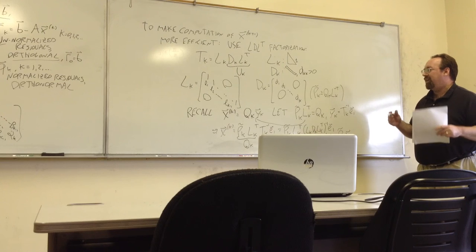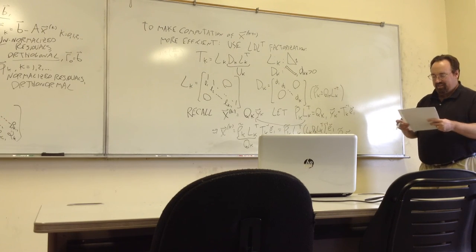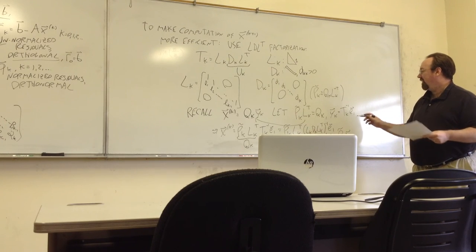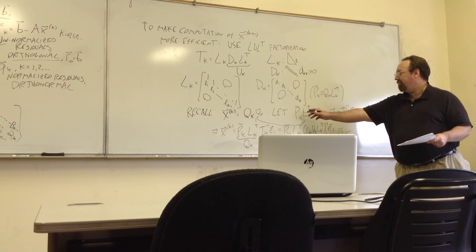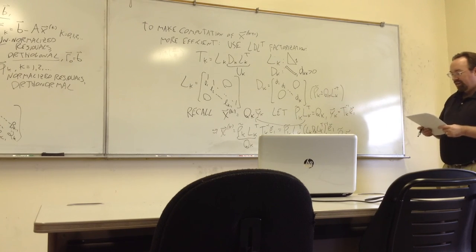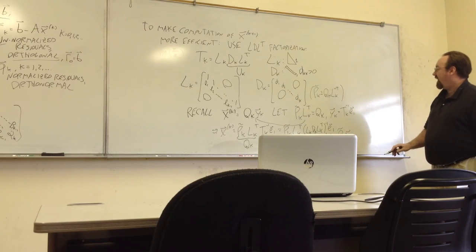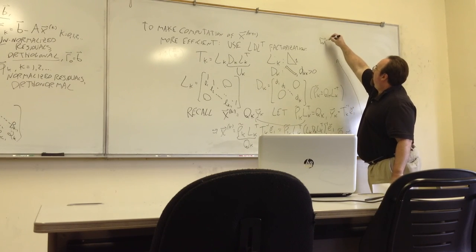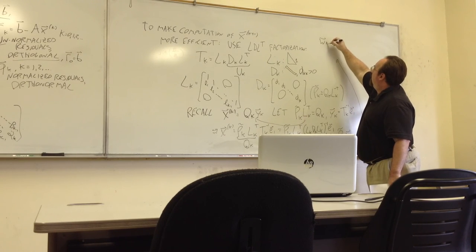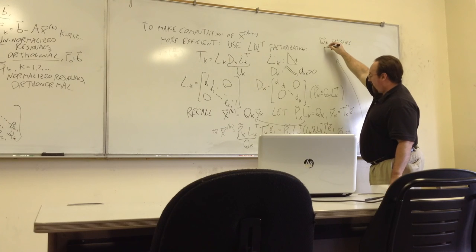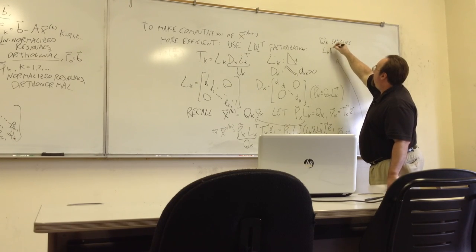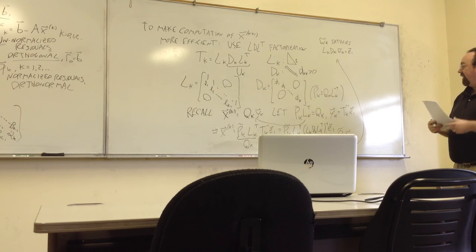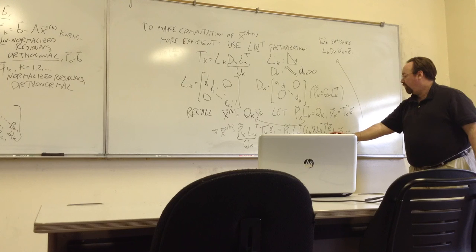It has to do with this relationship between the columns of P tilde and the columns of Q. Now, this vector WK, the way I've defined that, WK satisfies this equation: LK DK WK is equal to E1. I just got that from rearranging everything that's down here.